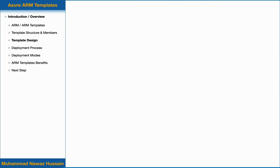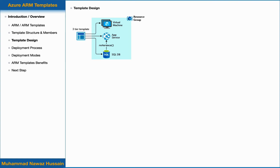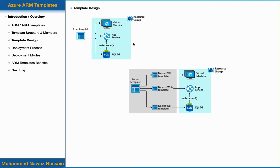When we create an ARM template, how you define templates and resource groups is entirely up to you and how you want to manage your solutions. For example, if you want to deploy a three-tier application with a database, virtual machine, and web app, you can create a single ARM template that includes all three resources. When you deploy that template, it will create all required resources in the same resource group. Alternatively, if adding everything to one template makes it too complex, you can create each resource in a separate template and use nested templates within a parent template.